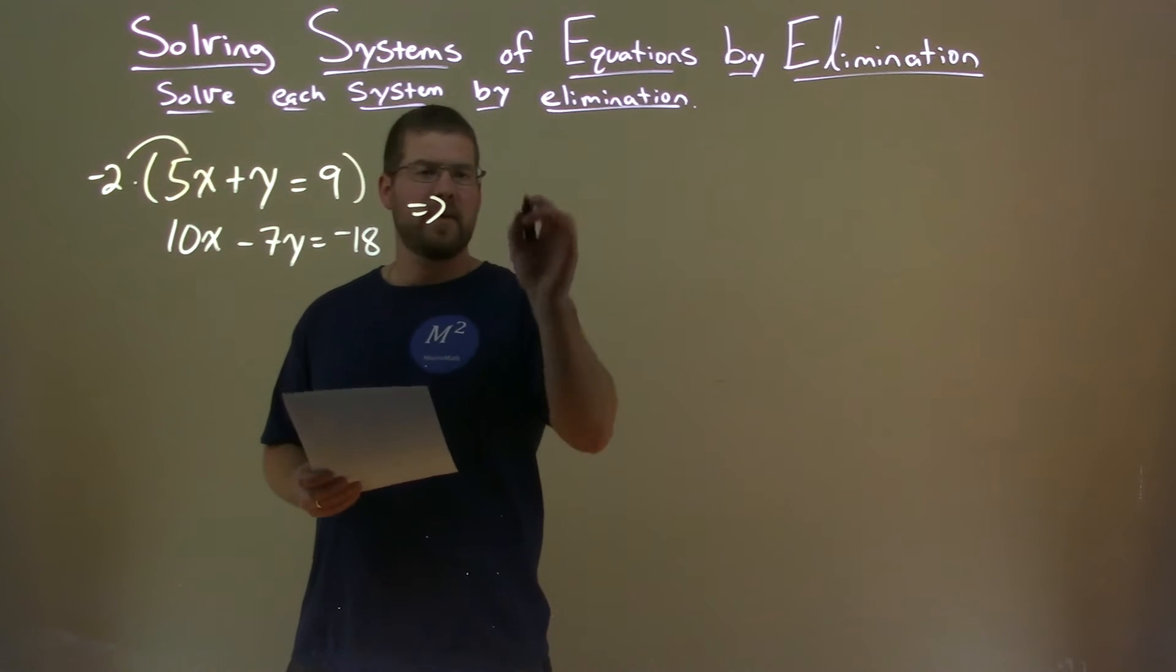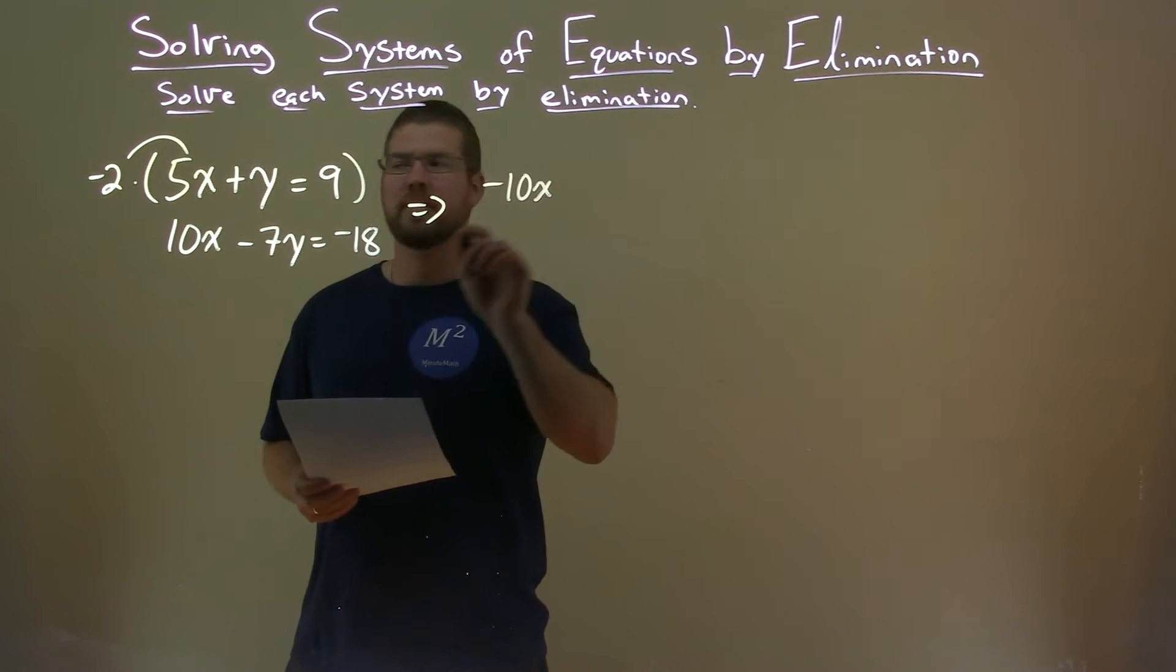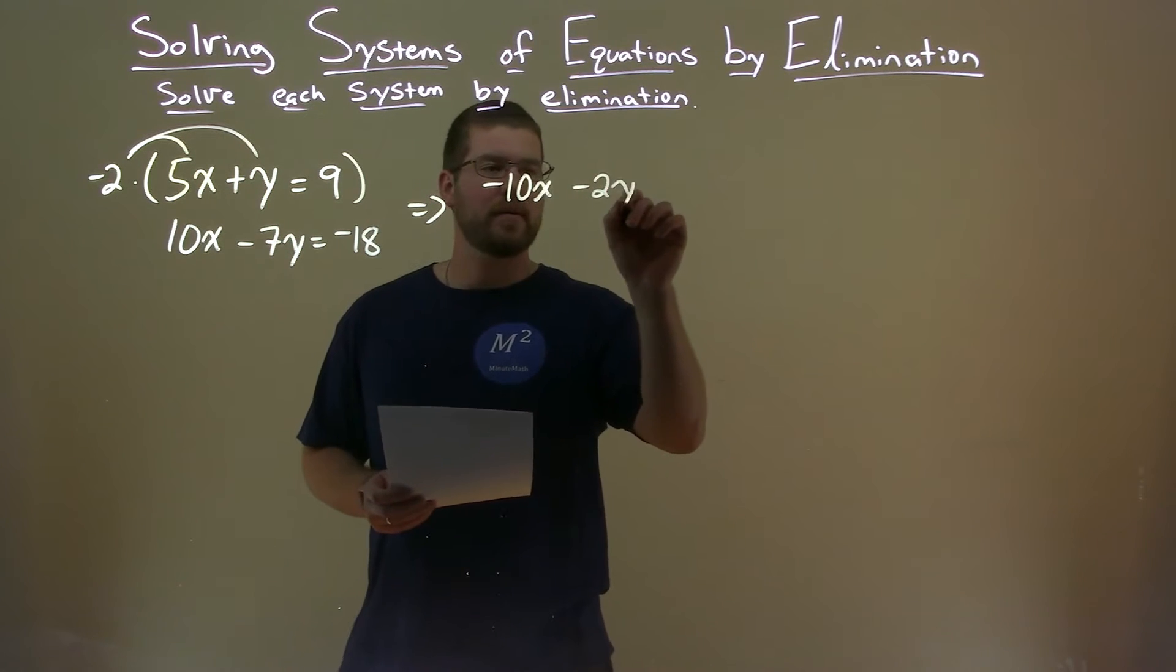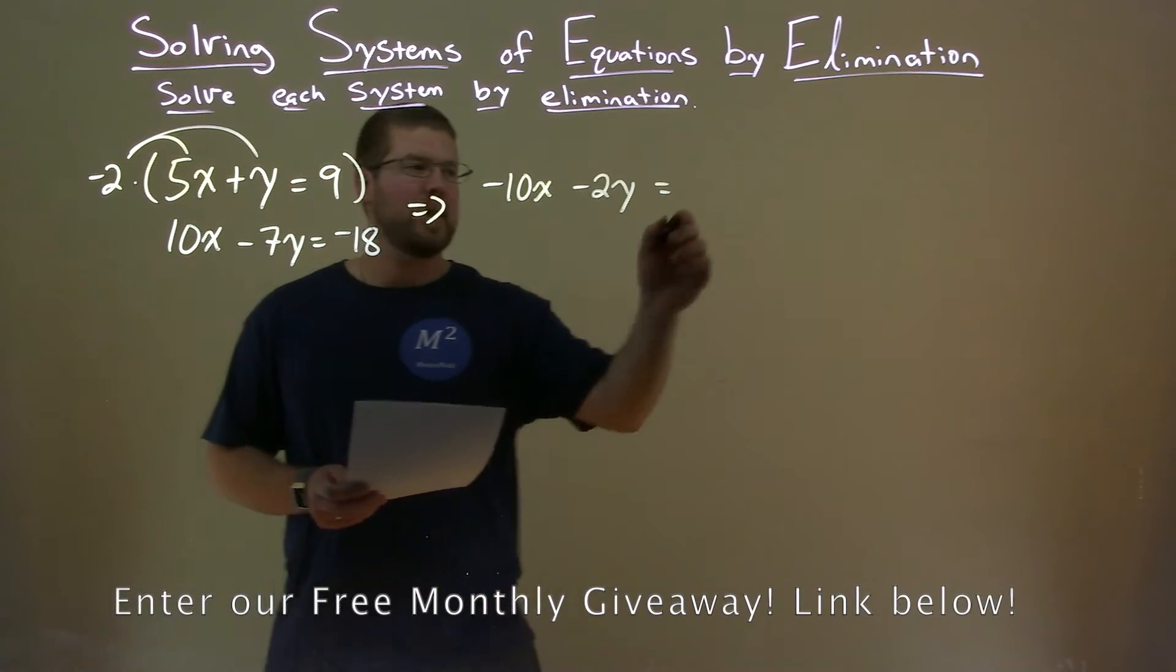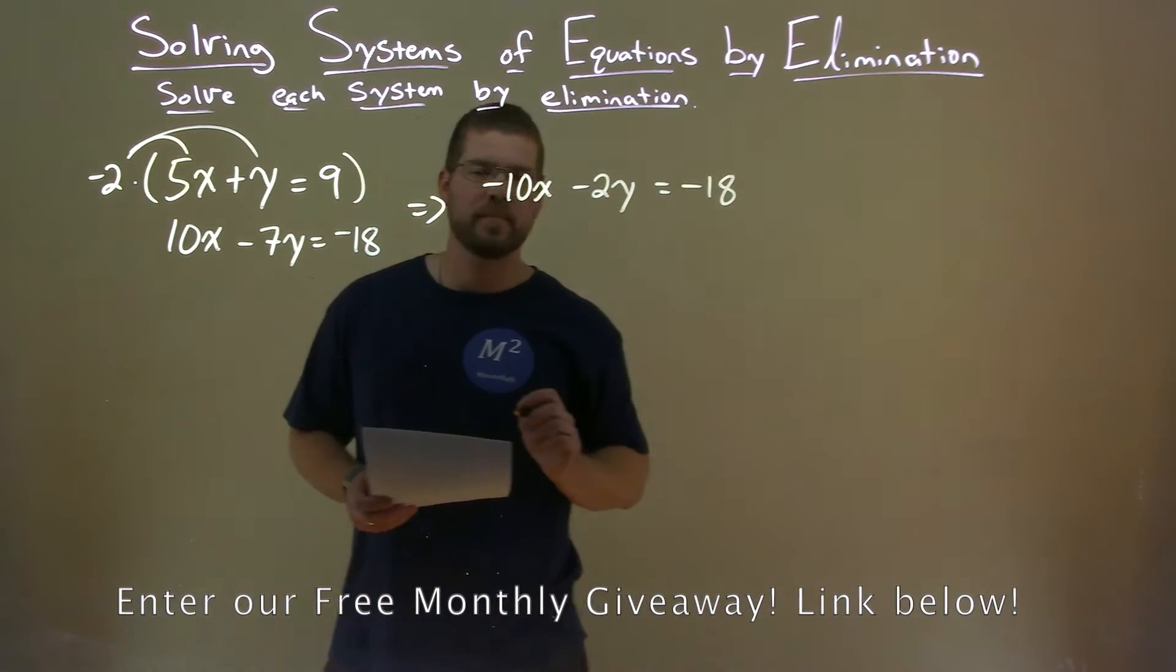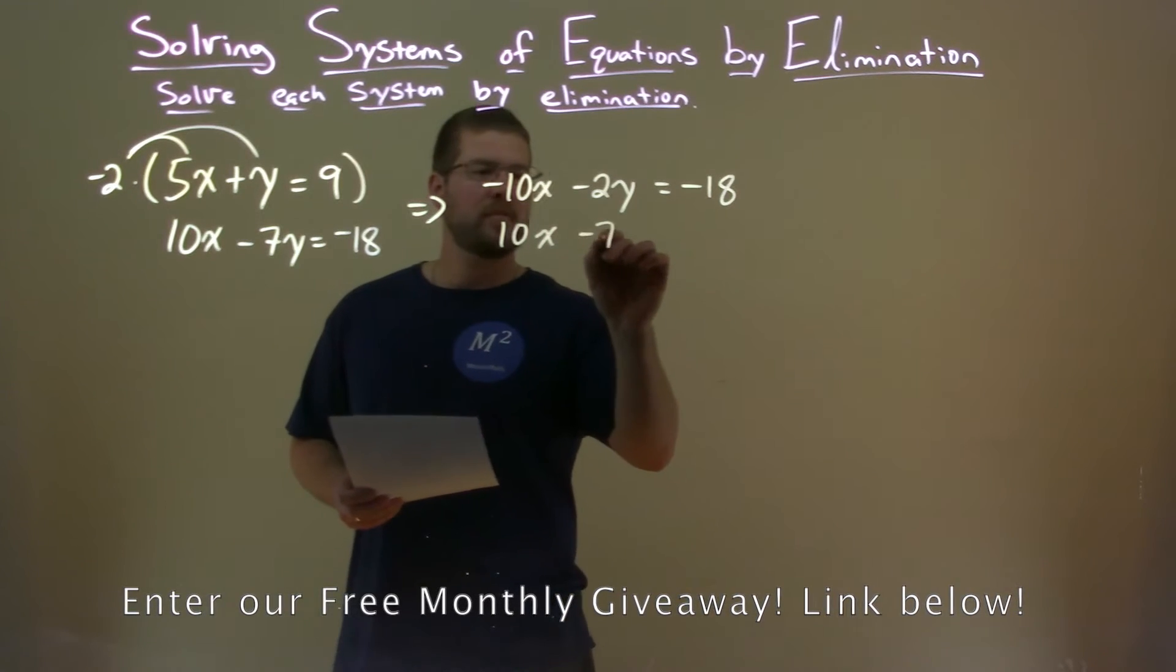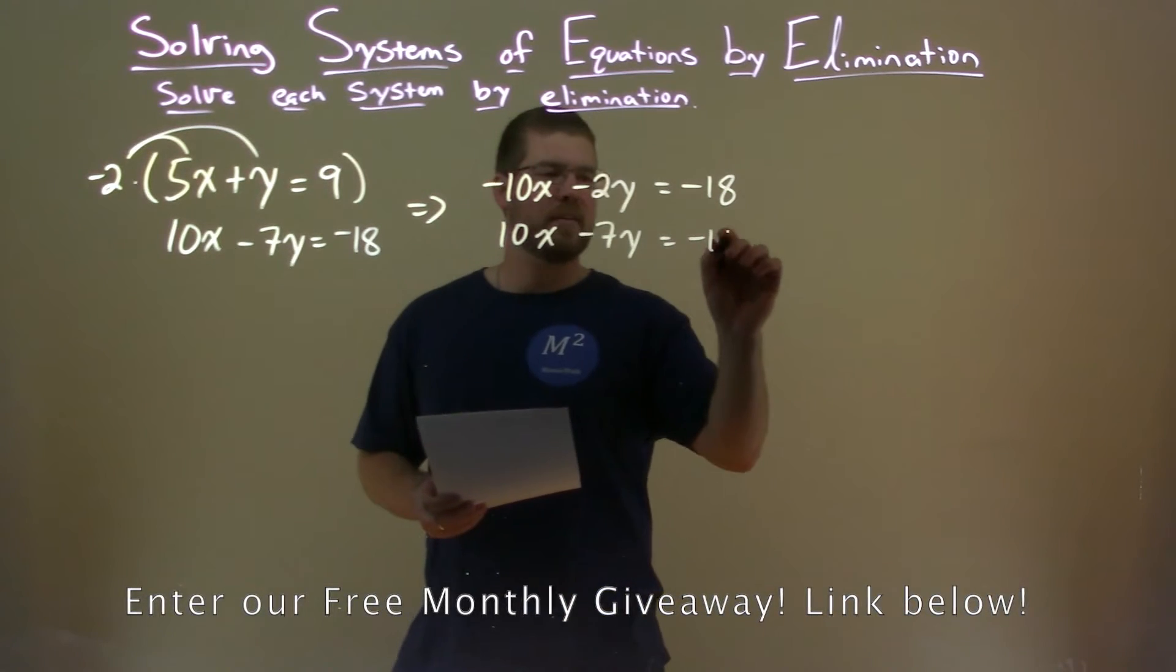Negative 2 times 5x is negative 10x. Negative 2 times y is negative 2y. Negative 2 times 9 is negative 18. Second equation just comes over, 10x minus 7y equals negative 18.